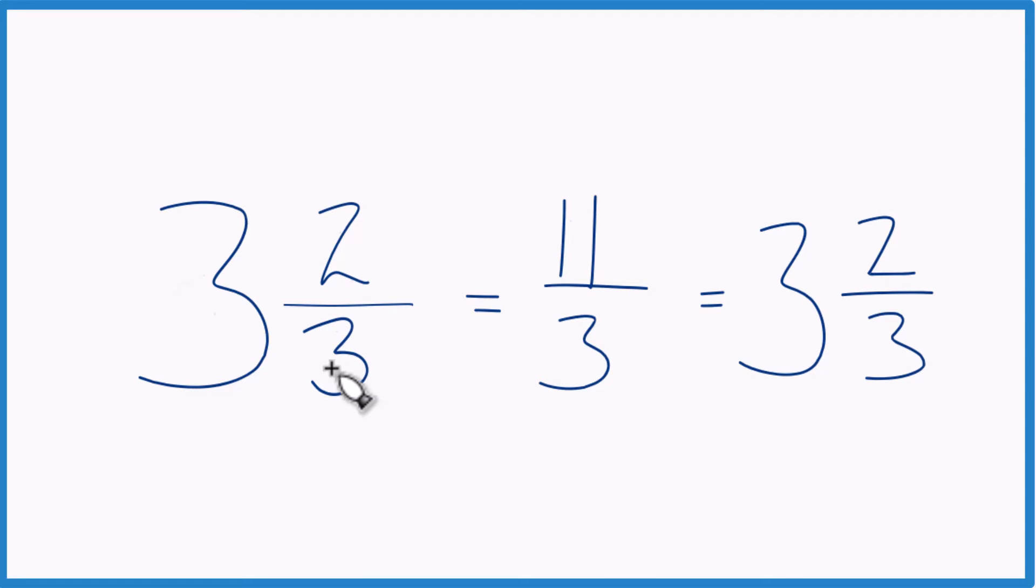That's what we got before. This is Dr. B, writing the mixed number 3 and 2 thirds as an improper fraction. The answer, 11 thirds. Thanks for watching.